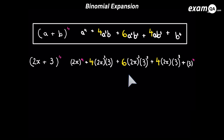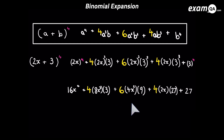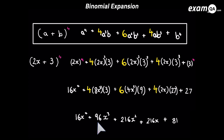So we've finished our expansion. Of course we do need to simplify it. Let's start by simplifying some of these brackets. We can then simplify the terms a little bit further and get our final most simplified form. And that's how we managed to expand 2x plus 3 to the power of 4 without too much trouble.